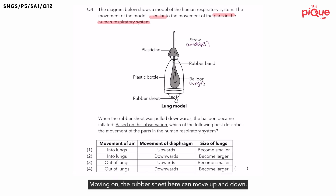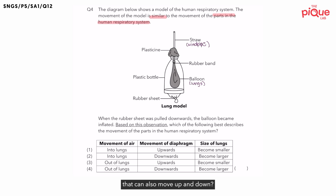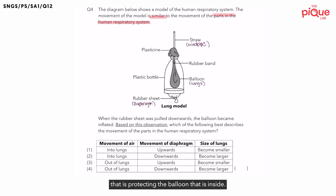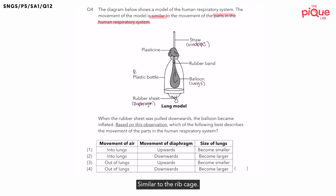Moving on, the rubber sheet here can move up and down, and this is similar to which part of the human respiratory system that can also move up and down — similar to the diaphragm. Lastly, you have the plastic bottle that is protecting the balloon inside, similar to which part of the body that protects the lungs — similar to the ribcage.